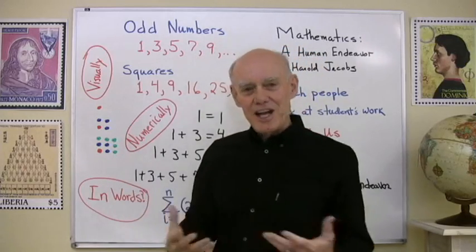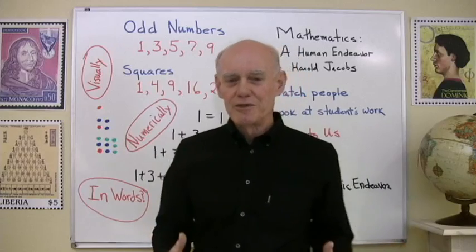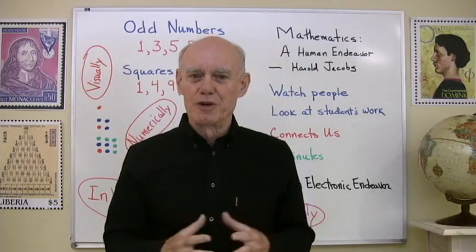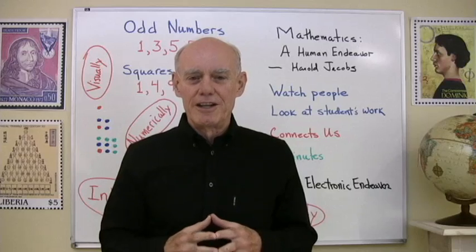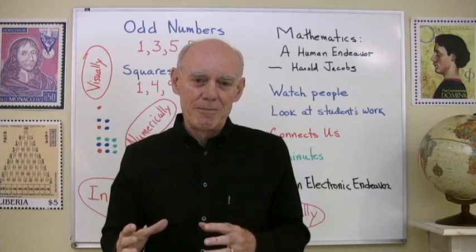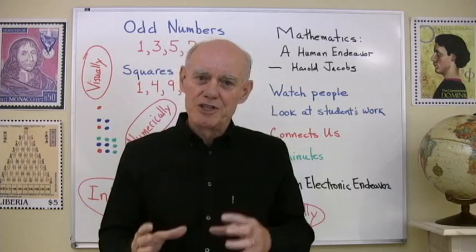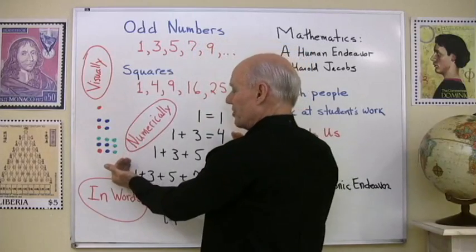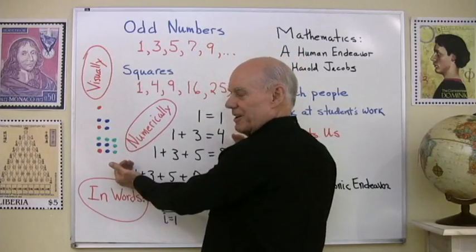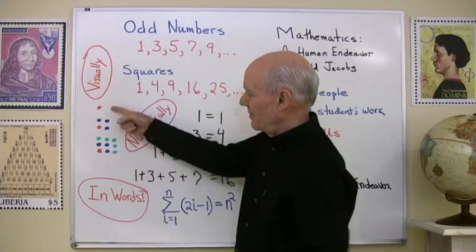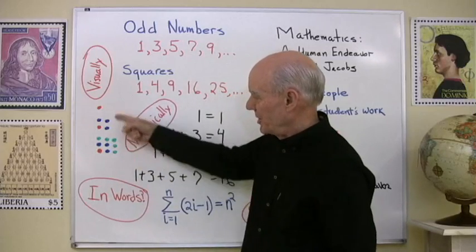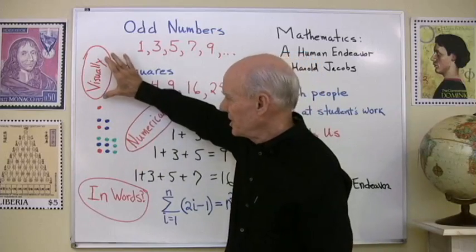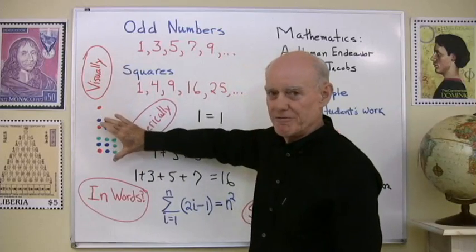We've set the stage to demonstrate to our students the rule of four — the idea that a topic in mathematics can be presented four different ways. We've done it numerically right here. The next step would be to show them a diagram or a picture something like this, so they can see the same idea visually.